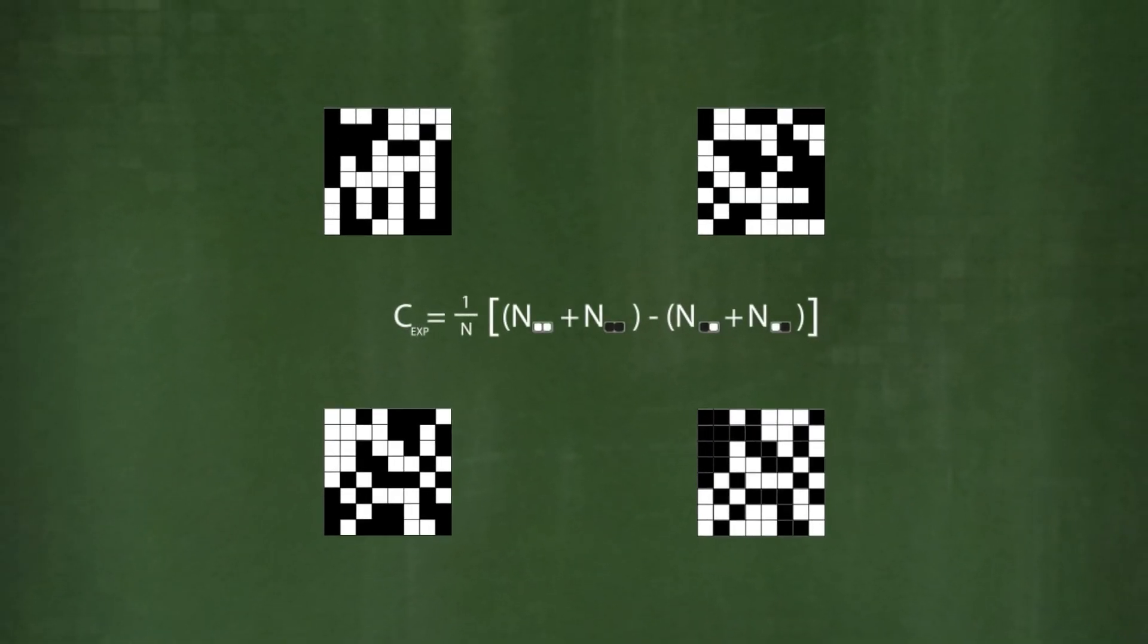A connection exists between the measurements, for example, if the results always match one another, or if they never match one another.